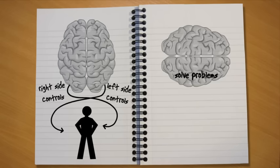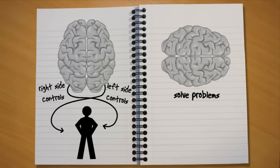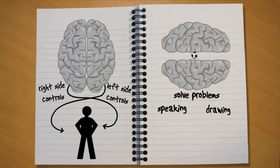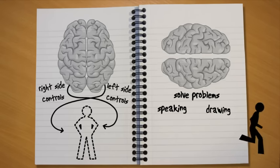When you're thinking you're using your cerebrum. You need it to solve maths problems, to speak, to draw pictures, to kick a football, to imagine things, just about anything you do in fact.